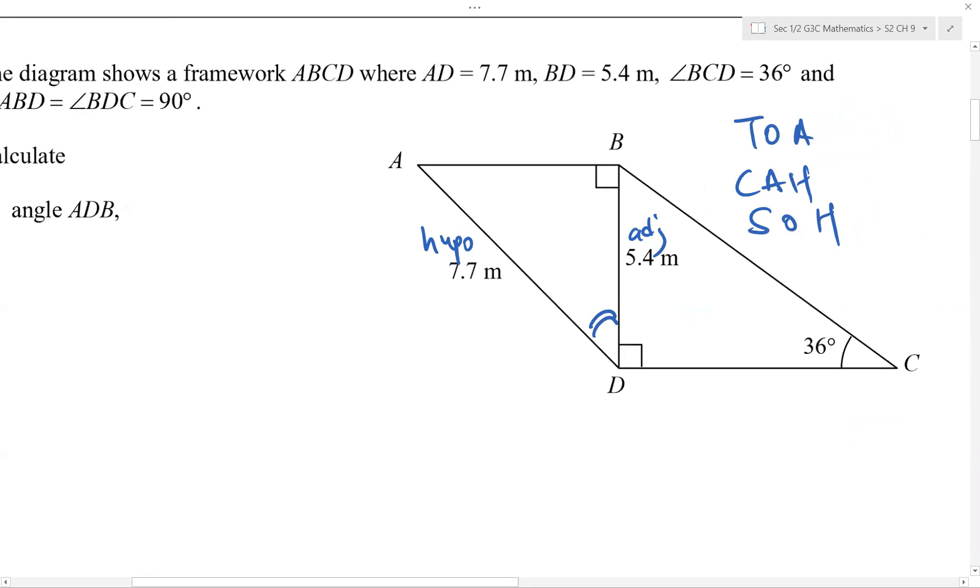So quickly, go back to your TOA CAH SOH. Which of these three has H and A at the same time? H and A, cosine. Straight away, I know cosine already. So right now, your equation, cosine. The format is the trig ratio, followed by angle. You have to write angle. In this case, I don't know the angle, but it has a name. The name is ADB.